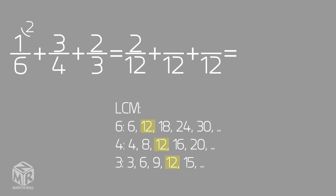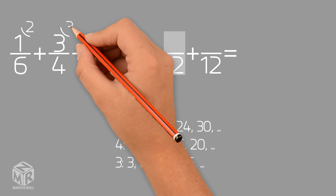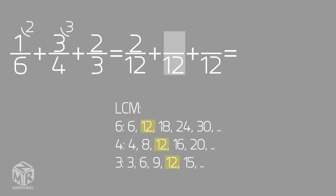To find the equivalent fraction of 3 over 4, we multiply both parts of the fraction — the numerator and the denominator — by 3. This gives us 9 over 12.